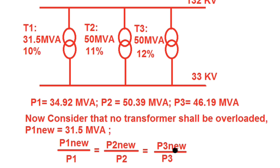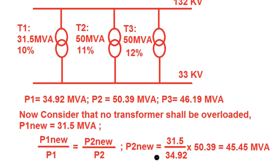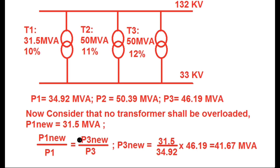From the formula P1_new/P1 = P2_new/P2, with P1_new = 31.5 MVA, we get P2_new = (31.5 / 34.92) × 50.39 = 45.45 MVA. Similarly, P3_new = (31.5 / 34.92) × 46.19 = 41.67 MVA.